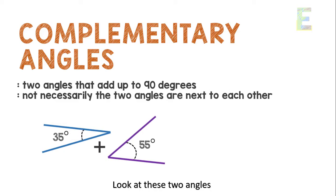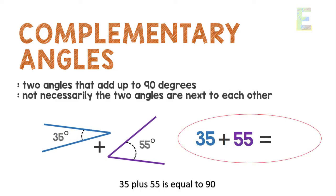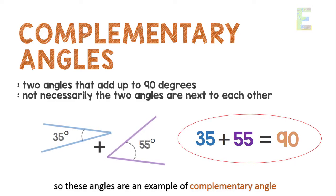Look at these two angles. 35 plus 55 is equal to 90. So these angles are an example of complementary angles.